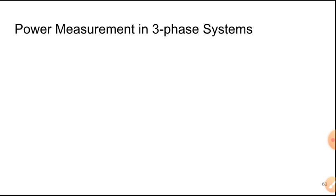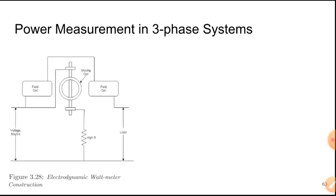The next topic is how do we measure power in three-phase systems. We know how to measure voltage and current, and we know that voltage and current affect power. Power equals voltage times current in a single-phase DC circuit, and we just add the power factor in AC circuits. So how about in a three-phase system? Here we have a picture of an electrodynamic wattmeter, which we use to measure power.